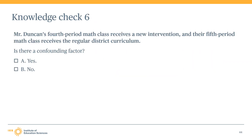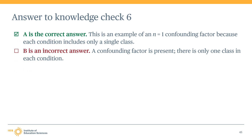Knowledge Check 6: Mr. Duncan's fourth period math class receives a new intervention and his fifth period math class receives the regular district curriculum. Is there a confounding factor? The correct answer is Yes. There is an N equals one confounding factor because there is a single class in each condition. It is impossible to separate the effects of the intervention from any other effects of that particular class in the intervention group, such as classroom composition or peer effects that might influence outcomes.